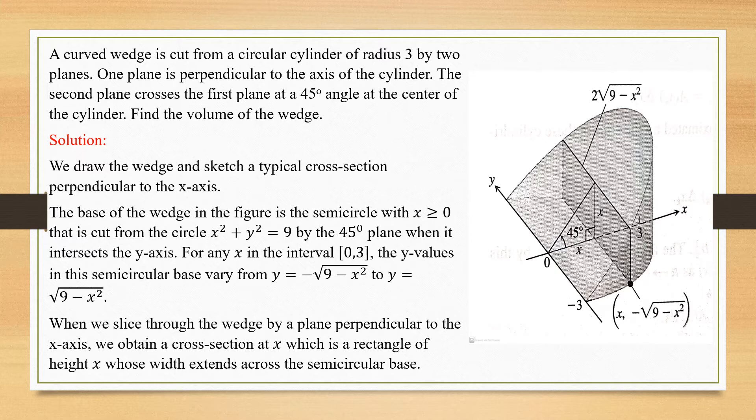The second plane is cutting the cylinder at an angle of 45 degrees, which means it is slicing up the cylinder — it is lifted to some 45 degrees. You could see the angle here: the first plane is placed below and the second plane is tilted to an angle of 45 degrees and sliced. So automatically the shape achieved by the second plane looks like a wedge.